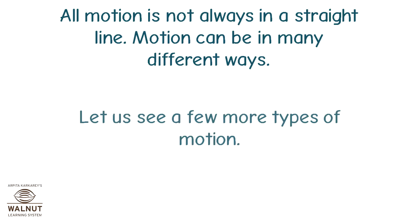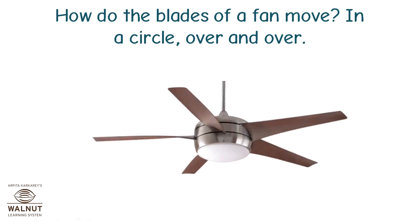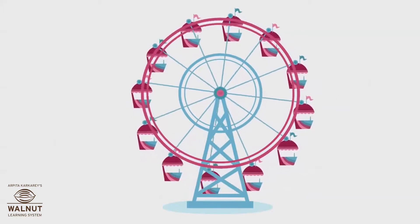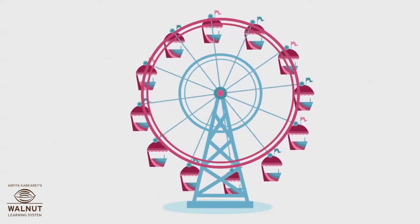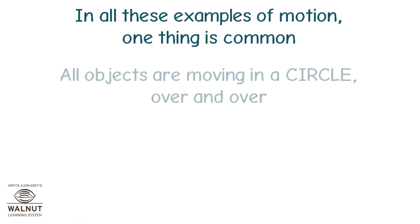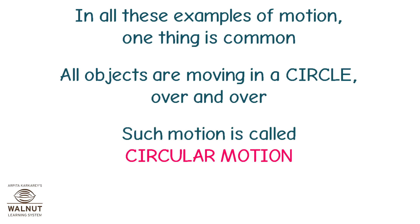Let us see a few more types of motion. How do the blades of a fan move? In a circle, over and over. How do the hands of a clock move? In a circle, over and over. How do people in a giant wheel move? In a circle, over and over. In all these examples, all objects are moving in a circle over and over — such motion is called circular motion.